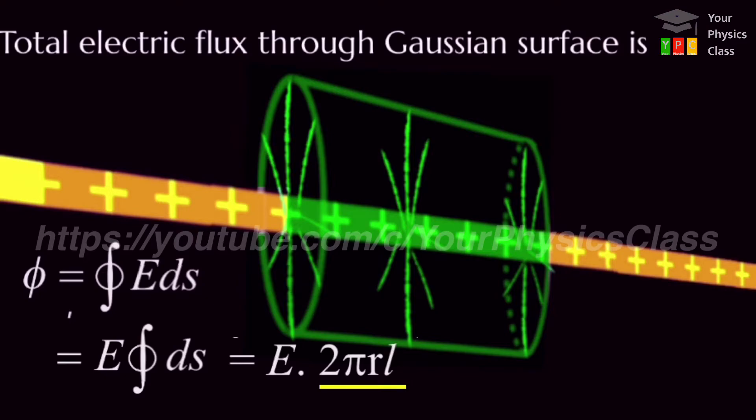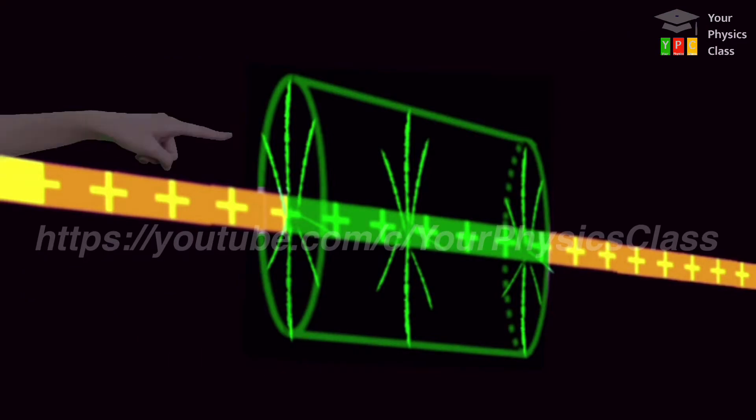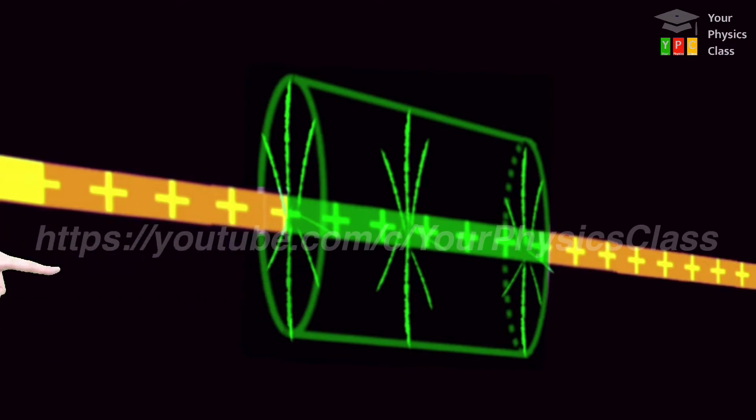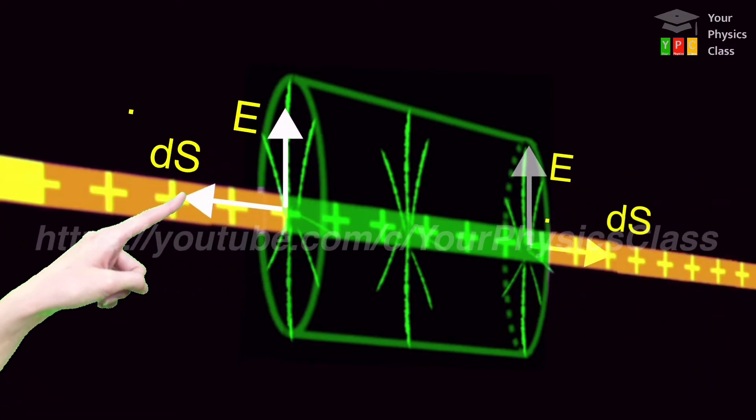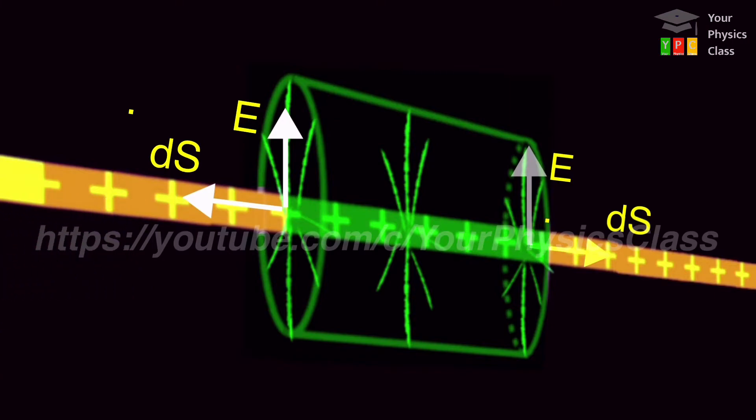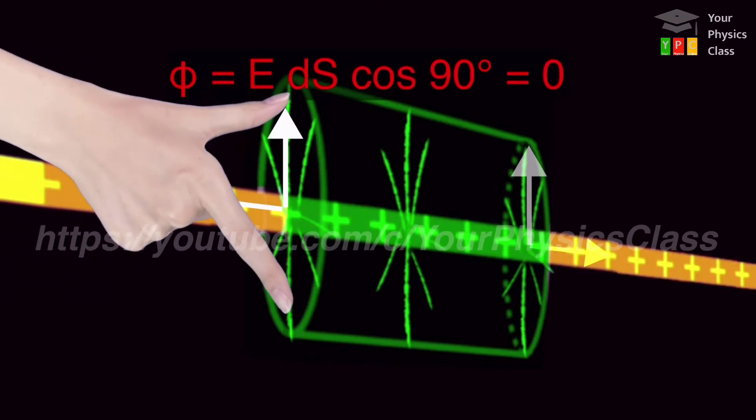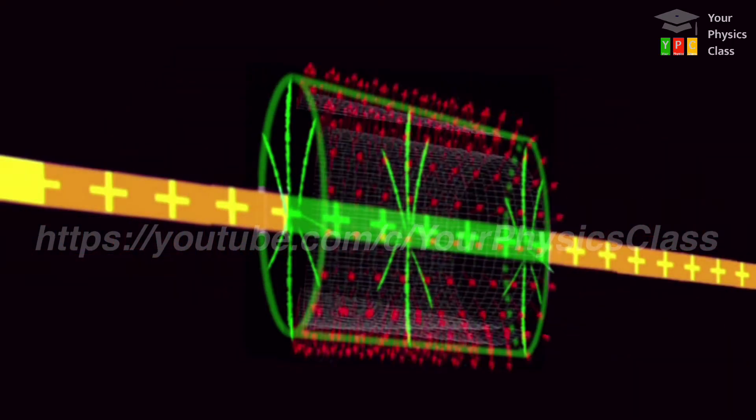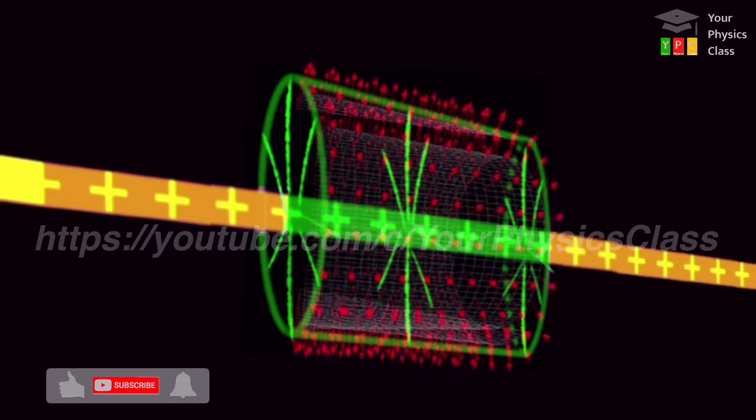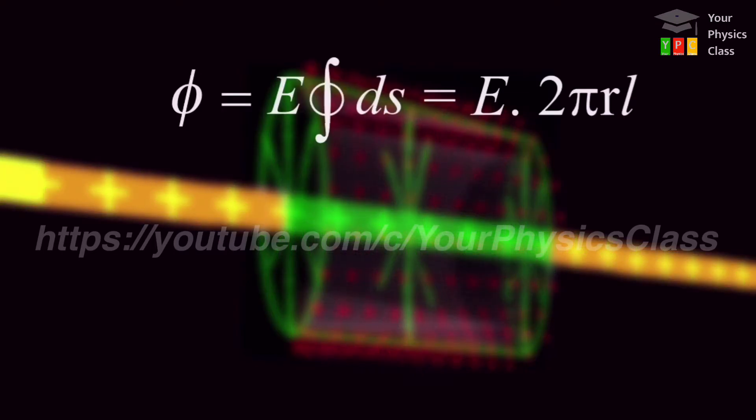Friends, yahan per gaussian surface per jo flat circular area hai, woh flux ko perpendicular direction mein hone ki wajah se, net flux through flat circular disk will be zero. So entire flux jo humara pass ho raha hai, woh sirf curved surface area of gaussian cylinder se ho raha hai. Isliye hum yahan per integration of ds le rahe hai 2 pi r l.